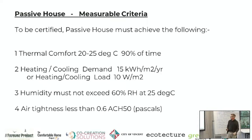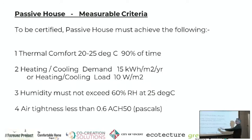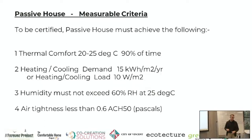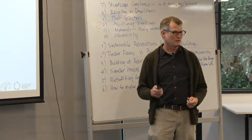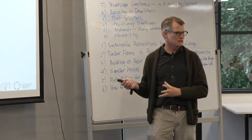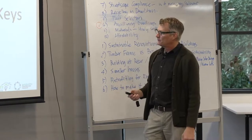Moving on to passive house — the main thing is it requires a very low amount of energy to keep the house comfortable, defined as 20 to 25 degrees Celsius 90% of the time. Passive house means that wherever you build — whether it's Antarctica or the Simpson Desert — you will achieve that same standard.